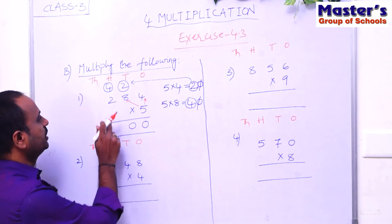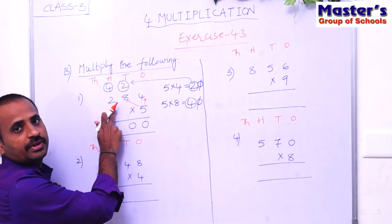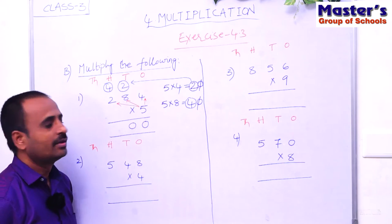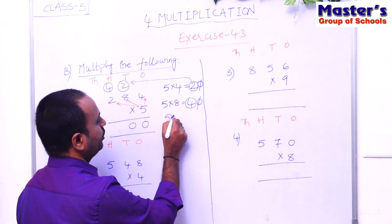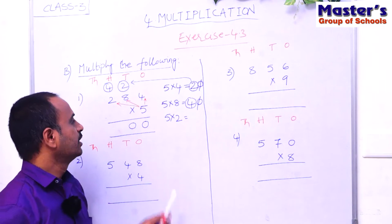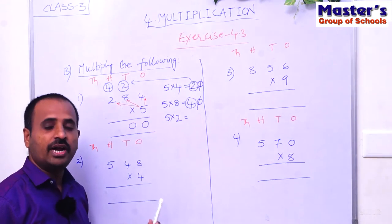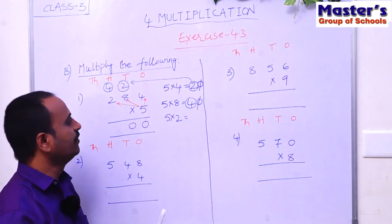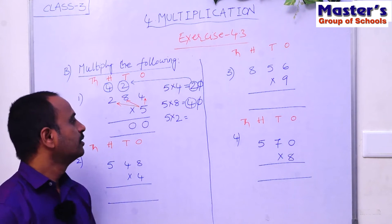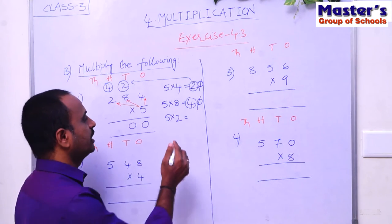Now multiply the digit in hundreds place with 5. The digit in hundreds place is 2, so multiply 2 with 5 — that is 5 × 2. Children, you need to know the 5th table thoroughly to do multiplications easily. 5 twos are 10, and 10 is also a two-digit number. If the product is a two-digit number, carry to the next place — the thousands place.